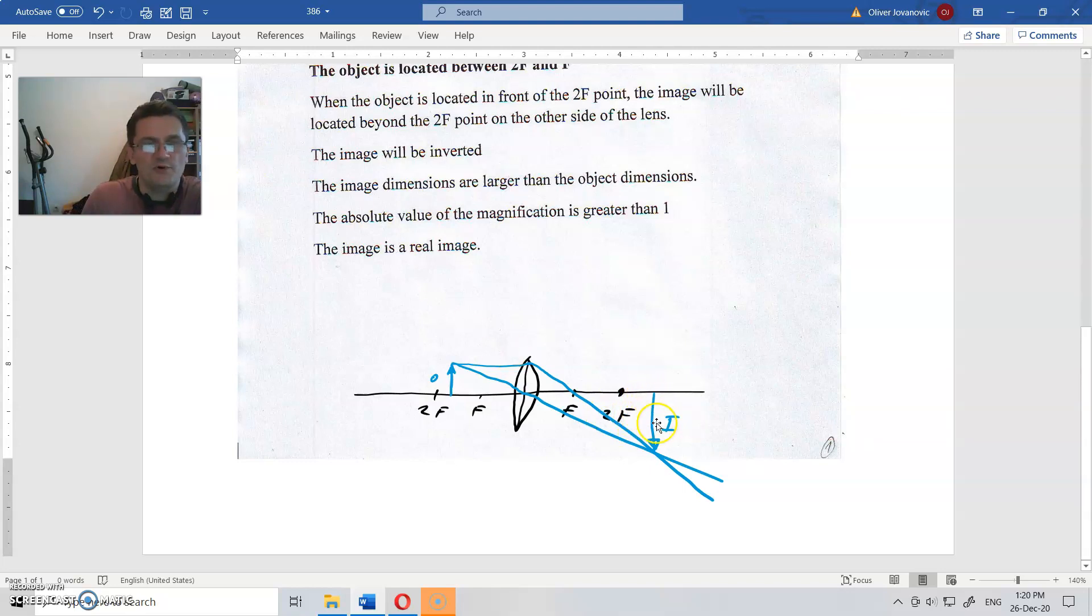that the image is real because it is at the intersection of the real rays. It is inverted, it is larger than the object, and it is on the other side of the lens.